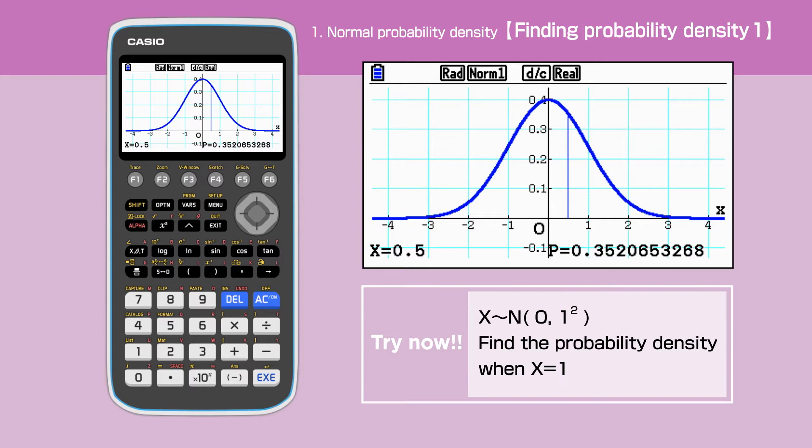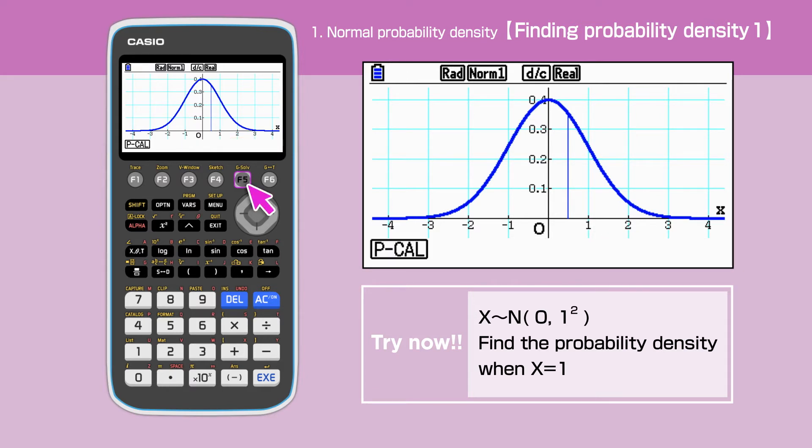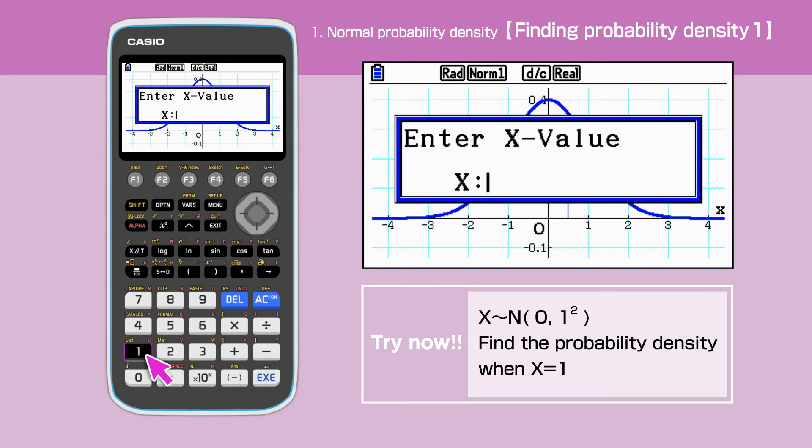Next, let's see what probability density is going to be when x equals 1. Press Shift to access command menu and press F5 to select the g-solve command. Press F1 to enter x value and in this case enter 1.